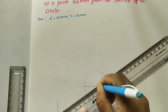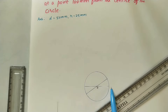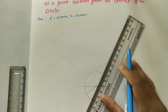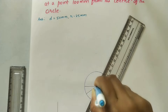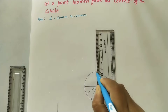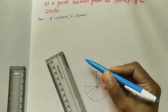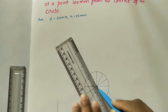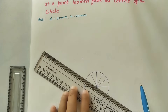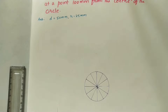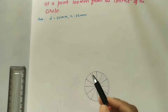Join each point to the center and extend that line within the circle. The circle is symmetrical about the taken diameter. Join this point to center, this point to center, and this point to center. So here we have divided the entire circle into 12 equal divisions. Each division angle is 30 degrees.